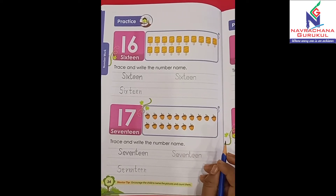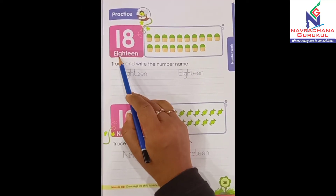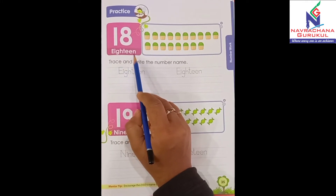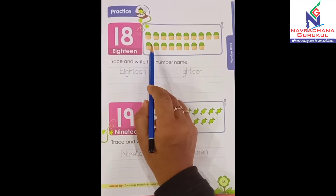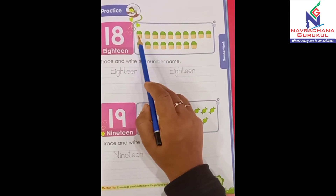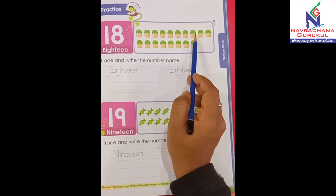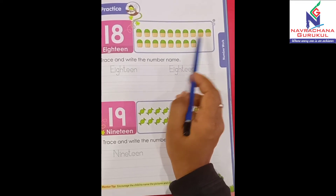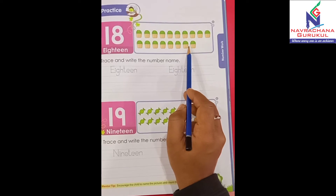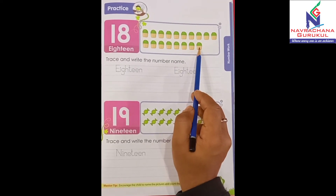Now let's check out number 18. E-I-G-H-T-E-E-N, 18. Let's count these cupcakes: 1, 2, 3, 4, 5, 6, 7, 8, 9, 10, 11, 12, 13, 14, 15, 16, 17, and 18. 18 cupcakes.